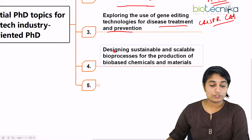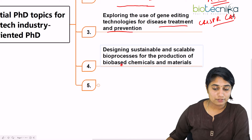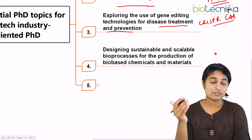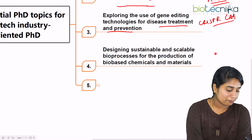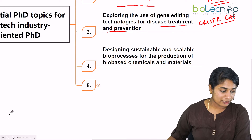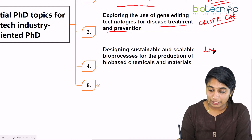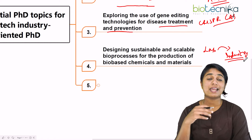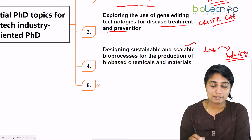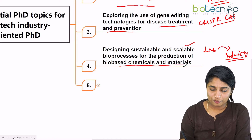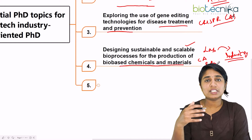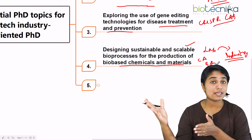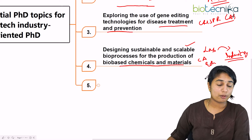The fourth topic is designing sustainable and scalable bioprocesses for the production of bio-based chemicals and materials. Bioprocess technology is a big thing in industries. In bioprocess, you have to convert lab-scale bioprocess into industry scale, so optimization and scale-up is definitely necessary. For example, it could be citric acid, ethanol, or any commercially important bio-based chemical or material. If you're able to come up with optimization, production, and scaling up of that particular material, then it's a very good topic to take up.